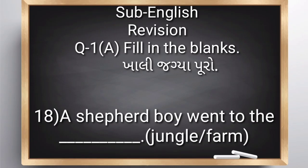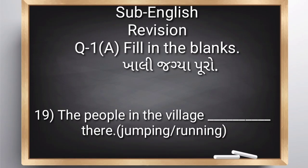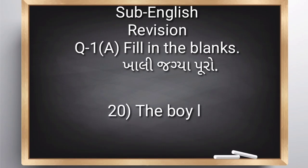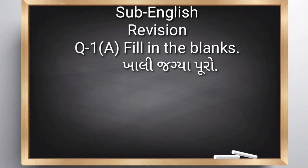A shepherd boy went to the jungle. Nineteenth: 'The people in the village blank there.' Option: jumping or running. Friends, did the village people go jumping or running? When the shepherd boy shouted 'help, help,' what did the village people do? They ran there. Twentieth: 'The boy lost all his blank.' Option: sheep or cow. Friends, do you all remember what happens at the end of that story? Who did the shepherd boy bring to the jungle? His sheep.